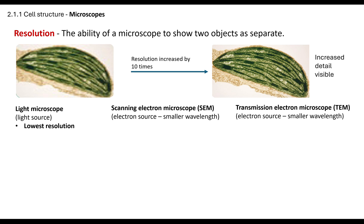Because the light microscope uses visible light as its source, it has the lowest resolution. The electron microscopes have a smaller wavelength in the electrons they use, so their resolution is greater than the light microscope — both the SEM and TEM have a higher resolution. The SEM resolution is between 5 to 50 nanometres, and the TEM is between 0.05 to 2 nanometres. Because you are sitting the new adapted specification you don't need to know those numbers, but you do need to compare the difference — the transmission electron microscope has the highest resolution compared to the scanning and the light microscope.